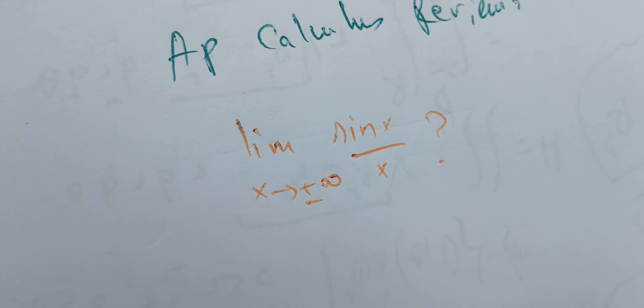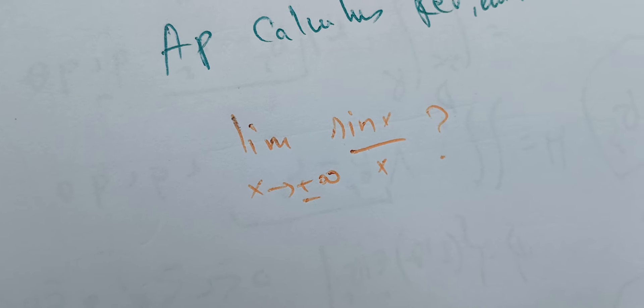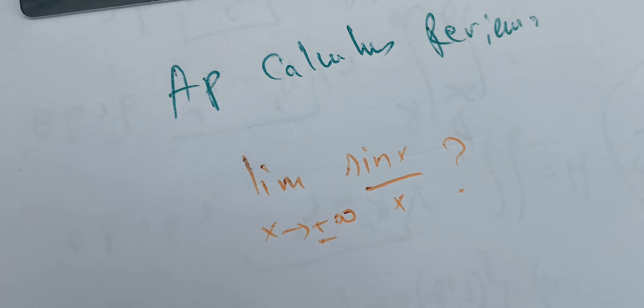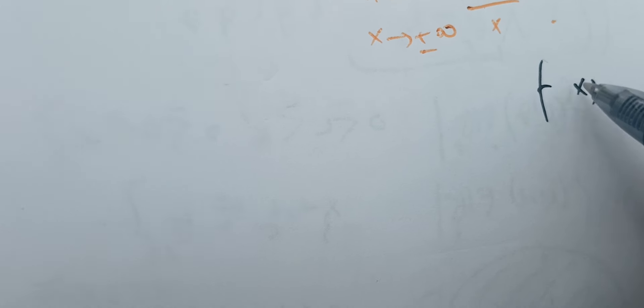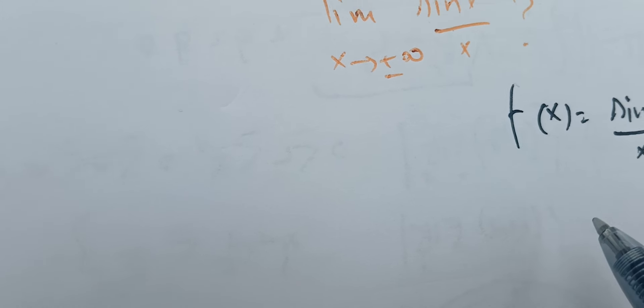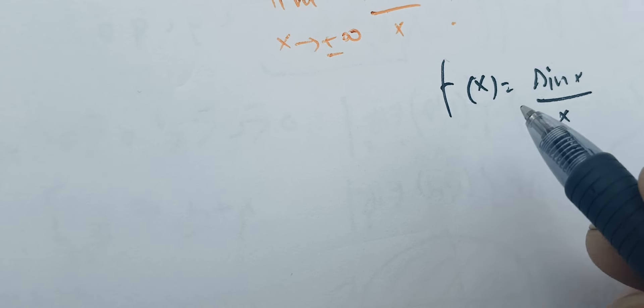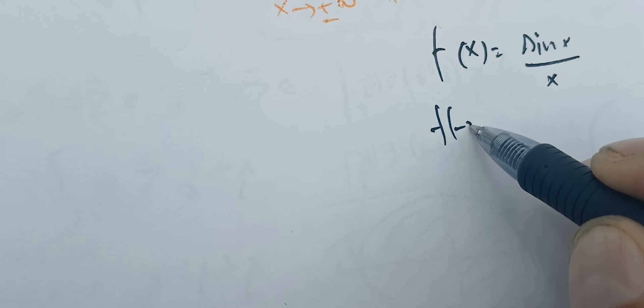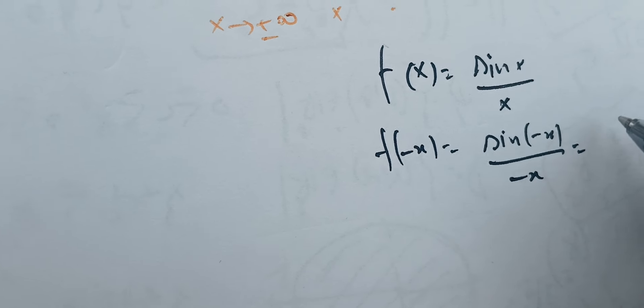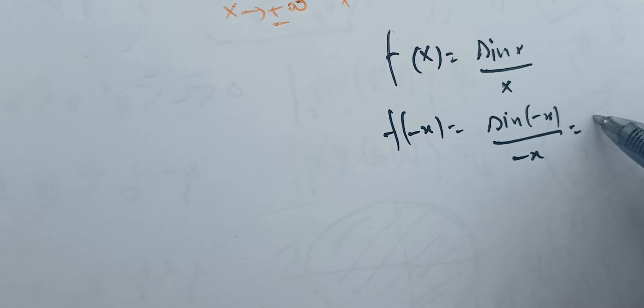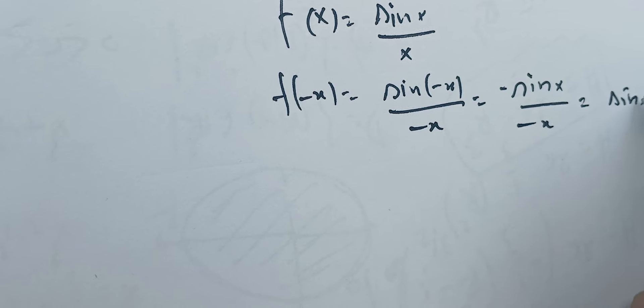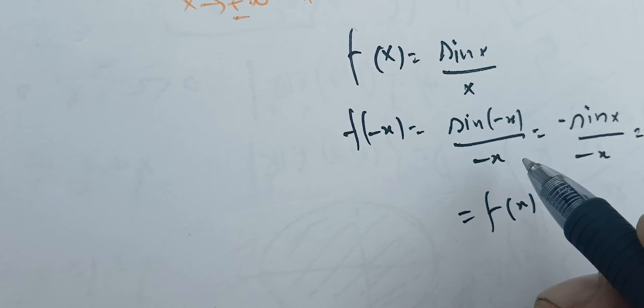We can see or prove easily that the function f of X equals sine of X over X is even. In fact, f of minus X equals sine of minus X over minus X. Since sine is odd, we get minus sine of X over minus X, which equals sine of X over X. This proves that f of minus X equals f of X.